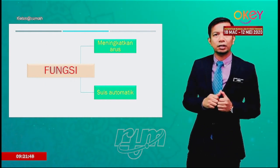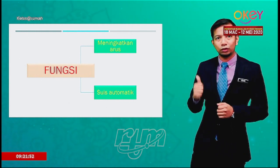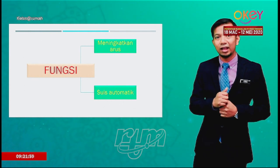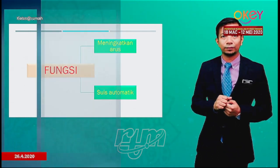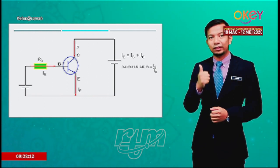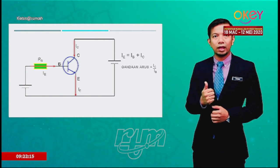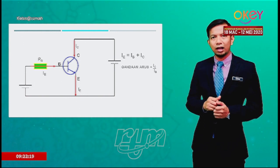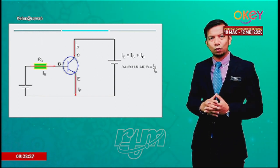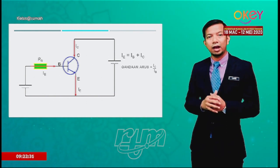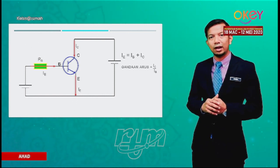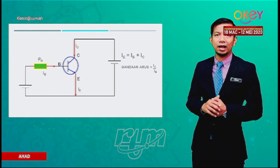Sebagai penguat arus, transistor dipasang di peralatan audio seperti radio dan televisyen. Sebagai suis automatik, transistor dipasang di lampu jalan dan bangunan untuk mengesan kebakaran. Dalam litar penguat arus, arus masuk dari terminal tapak dan pengumpul, menyebabkan nilai arus yang keluar pada terminal pengeluar adalah besar. Formula: IE = IB + IC, dan gandaan arus = IC / IB.